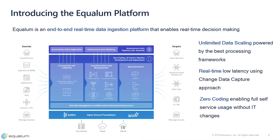CDC is about getting data changes non-intrusively off the system as they occur, which enables this to be done on a production system 24/7. So you don't have batch processes running all night for hours and then failing. You don't have the lag of collecting data only once a day — you have fresh data coming in all the time without impacting the source system. That is what CDC is about, and Equalum has a very robust library for CDC.